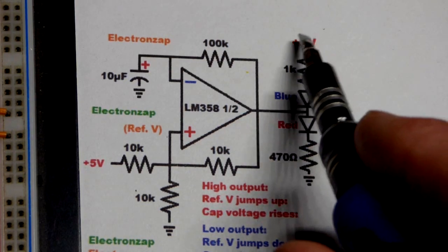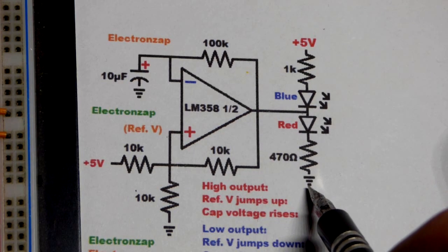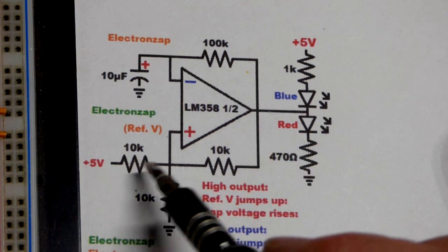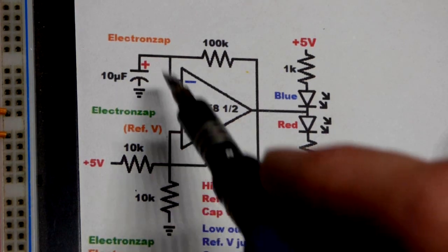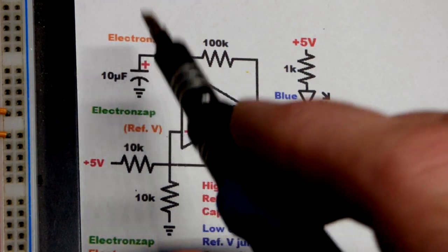The red LED lights up when the output is high. It's not going to get to five volts when it outputs, probably about three and a half or so, but it's enough to light a red LED. That high output raises the reference voltage and the capacitor charges up, starts filling up.